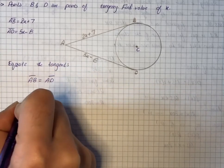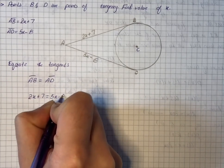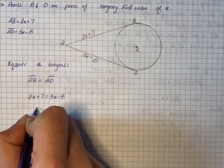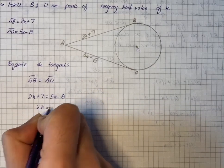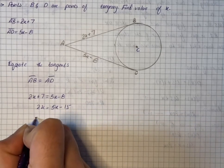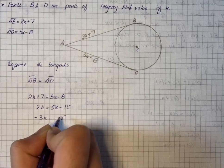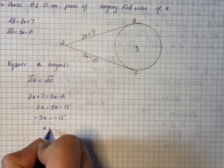The value of AB is 2x plus 7, and for AD is 5x minus 8. So we can write 2x plus 7 equals 5x minus 8. This gives us 2x minus 5x equals minus 15, so minus 3x equals minus 15, and x equals 5.